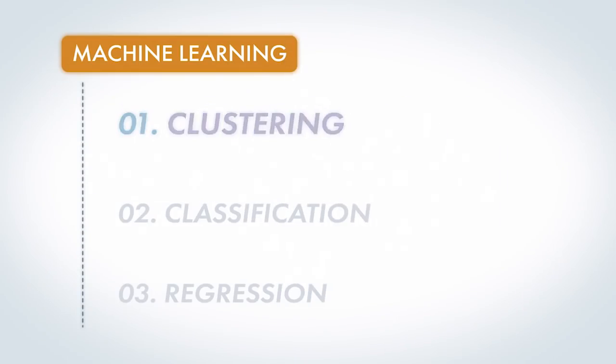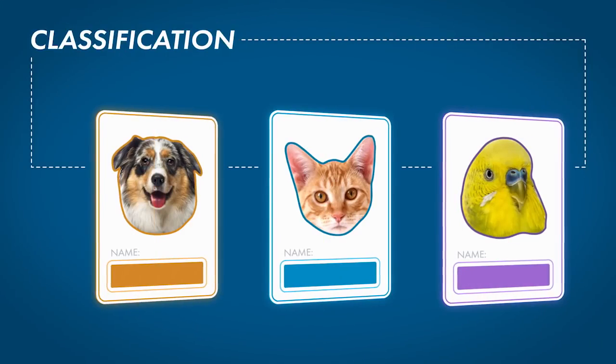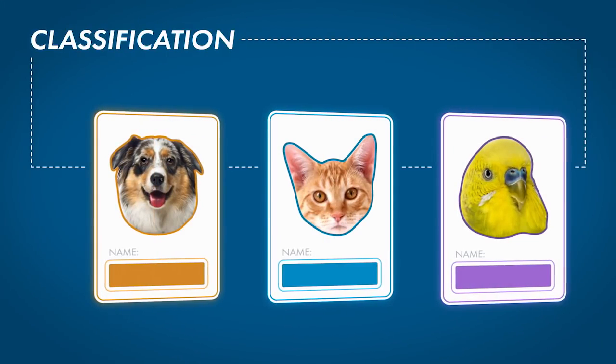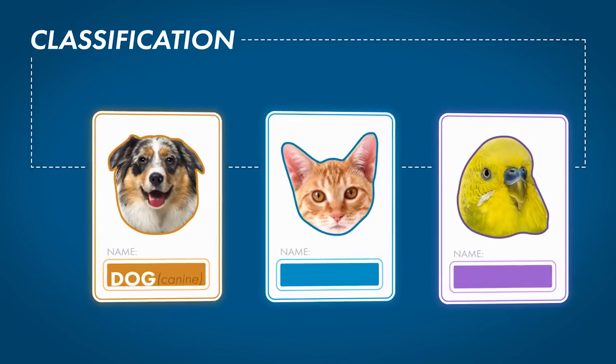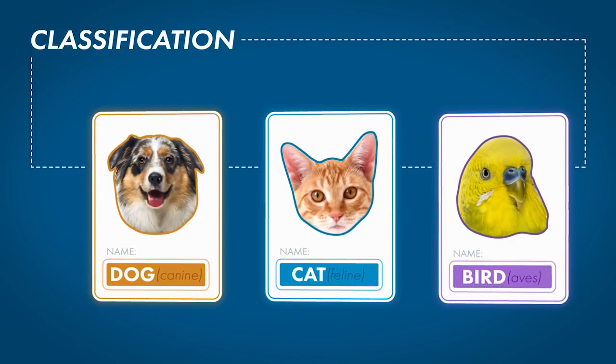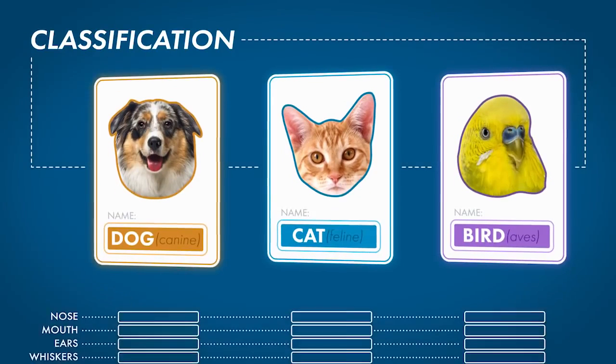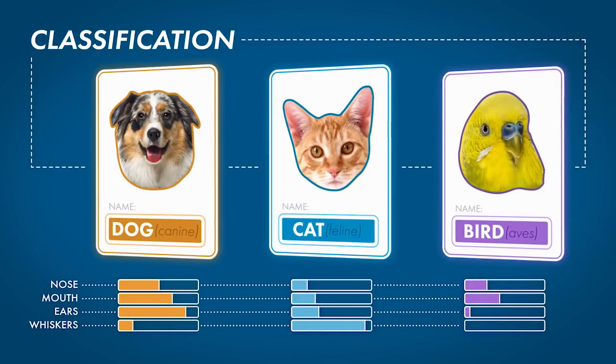Now let's move on to classification. You have the same cards, with each one labeled with three categories: either dog, cat, or bird. You need to determine the features that help distinguish between the different animals.